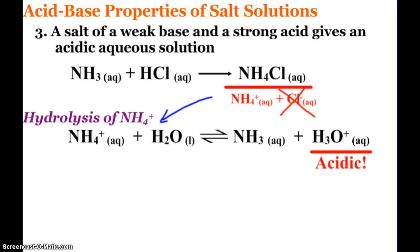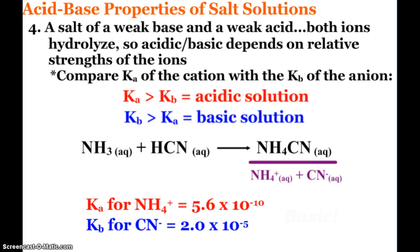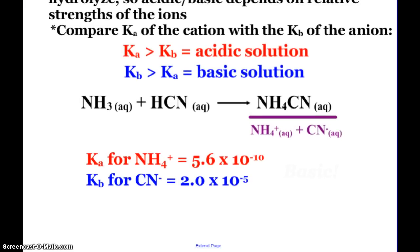If we have a salt made with a weak base and a weak acid, both ions hydrolyze. Whether the solution will be acidic or basic depends on the relative strengths of the ions, which we can see through Ka and Kb values. Here we have weak base ammonia and weak acid HCN, giving NH₄CN. The Ka for ammonium is 5.6×10⁻¹⁰ and the Kb for cyanide is 2×10⁻⁵. This salt solution will be basic because Kb is greater than Ka.